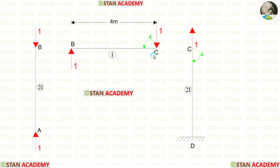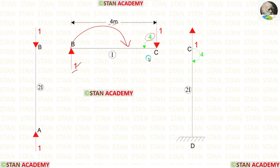The unit load creates a moment of 1 × 4 = 4 at point C. Since the load acts in the clockwise direction, the moment developed at one end is anticlockwise and at the other end is clockwise.